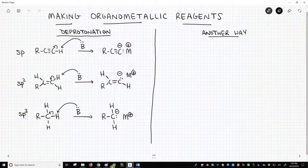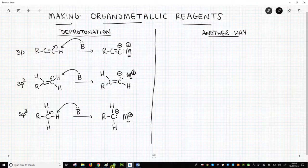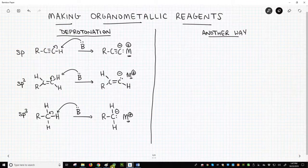On the left of the screen, we have three hypothetical deprotonations, breaking a CH bond to make a carbanion. Some metal cation will balance the charge so that the product of these deprotonations is an organometallic reagent.